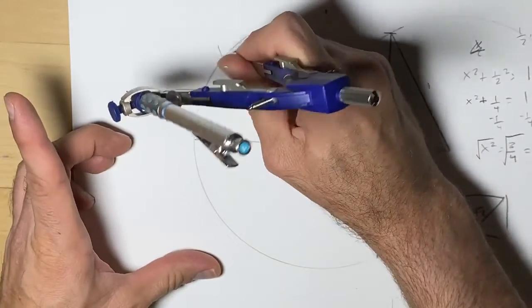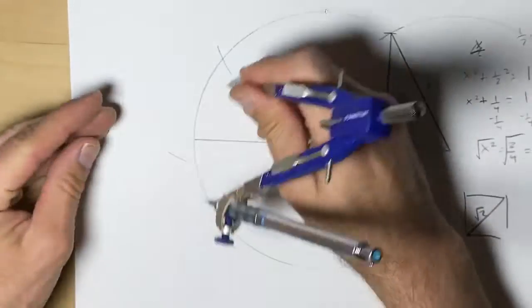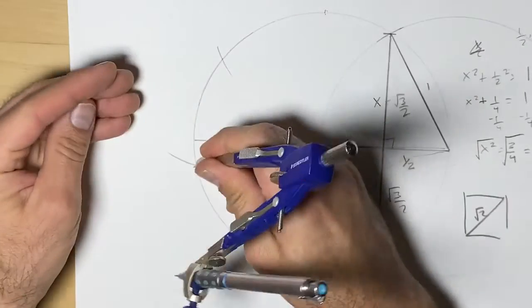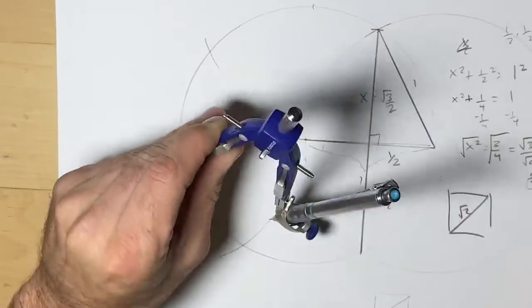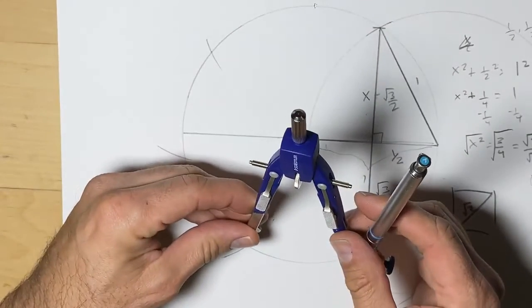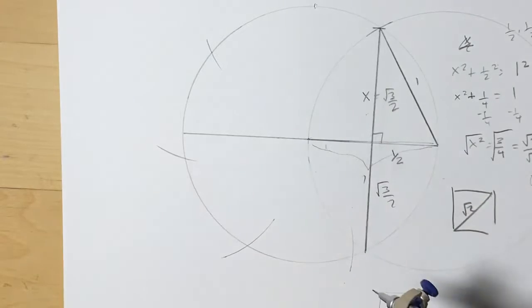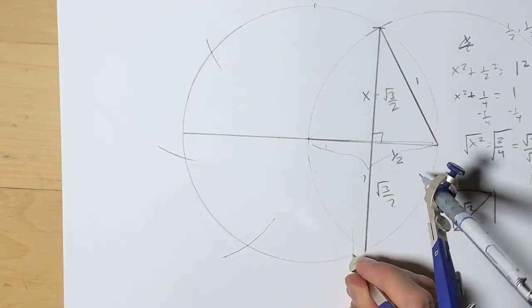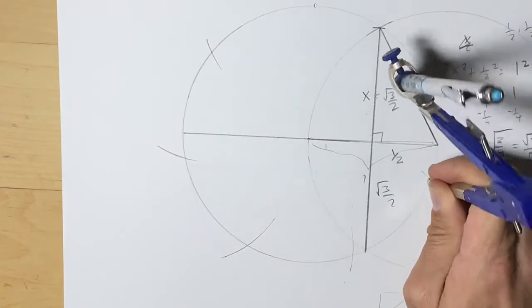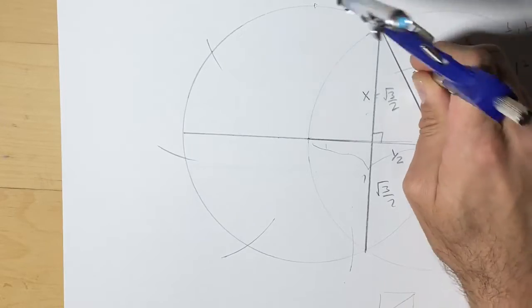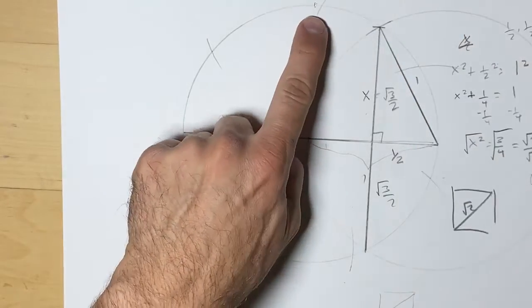One, two, do that again. So without moving the compass, it should exactly fit seven times, give or take a little, because again, for speed here, we're trying to do it quickly. I would really want to be a little bit more accurate. So it's a tiny bit off.